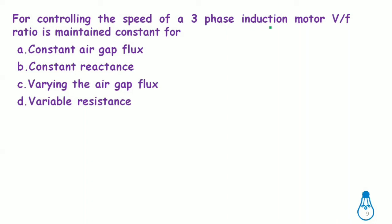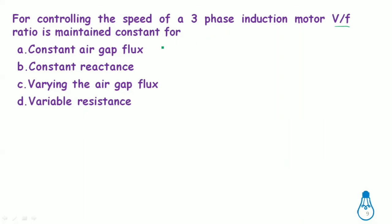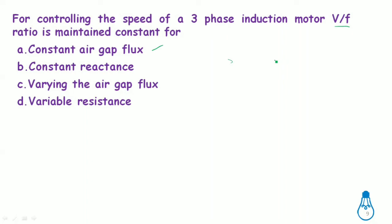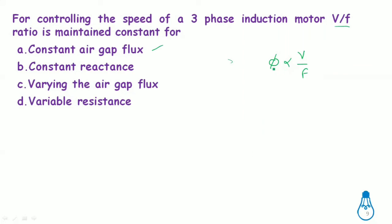For controlling the speed of a three-phase induction motor, the V/F (voltage to frequency) ratio is maintained constant. The reason is to maintain constant air gap flux. Keeping V/F constant ensures the air gap flux remains constant throughout the speed range.